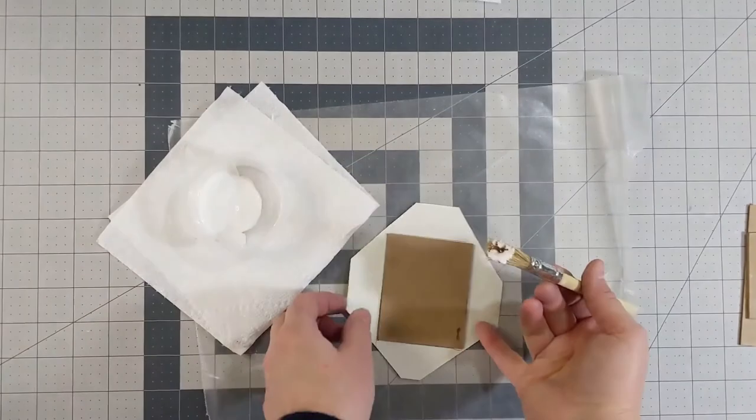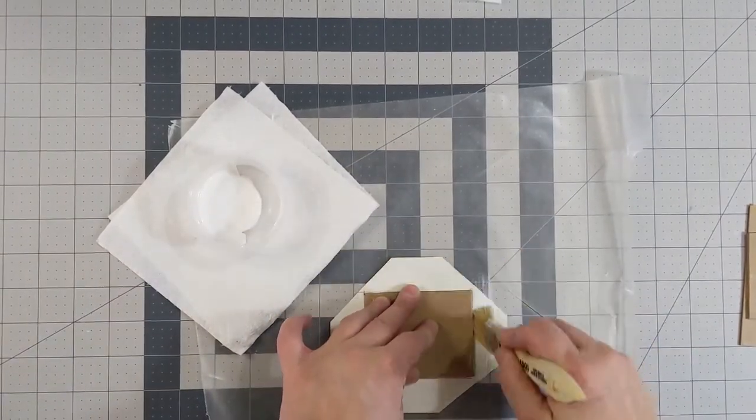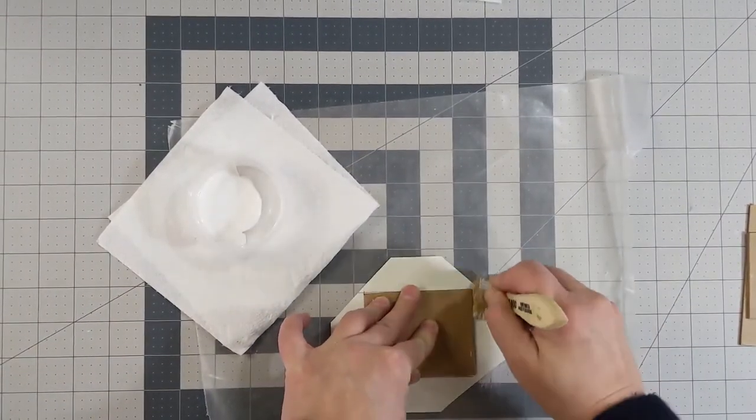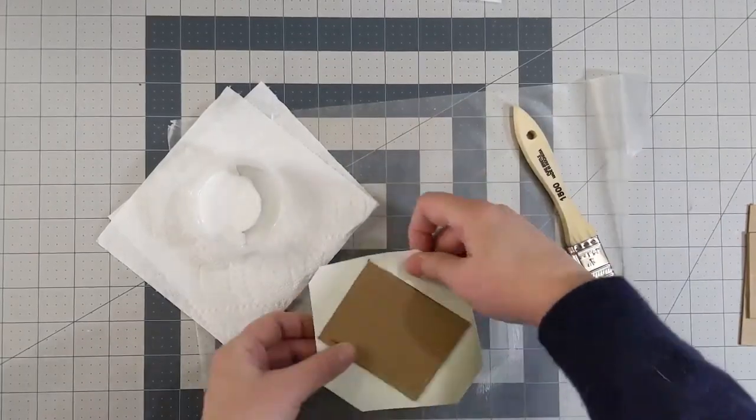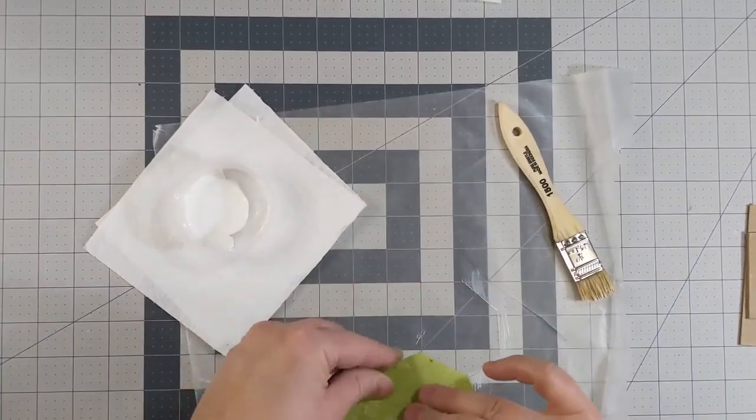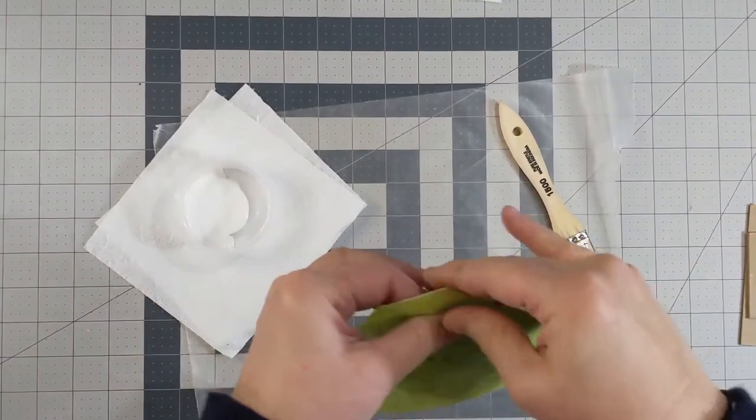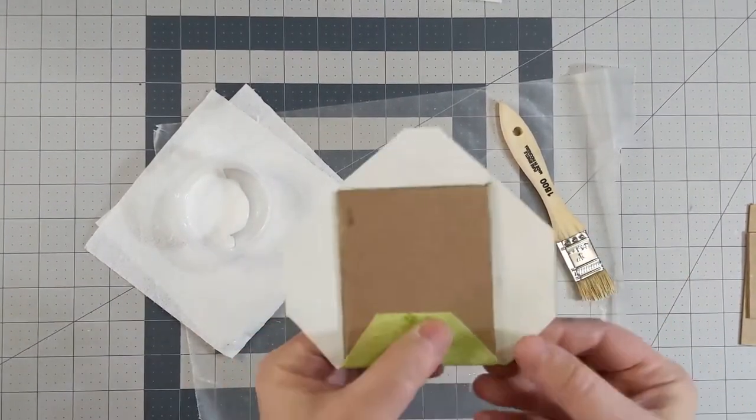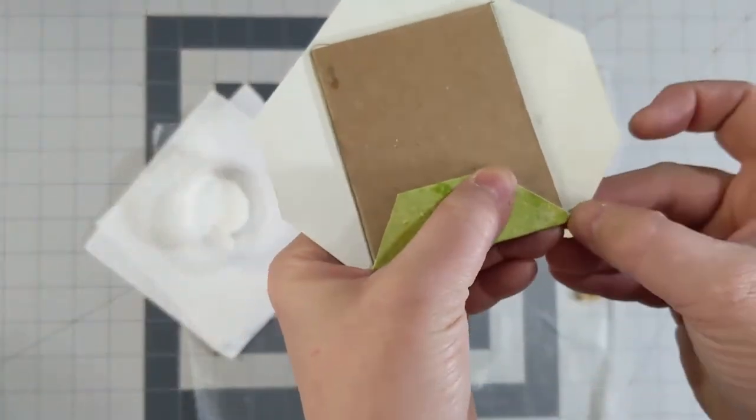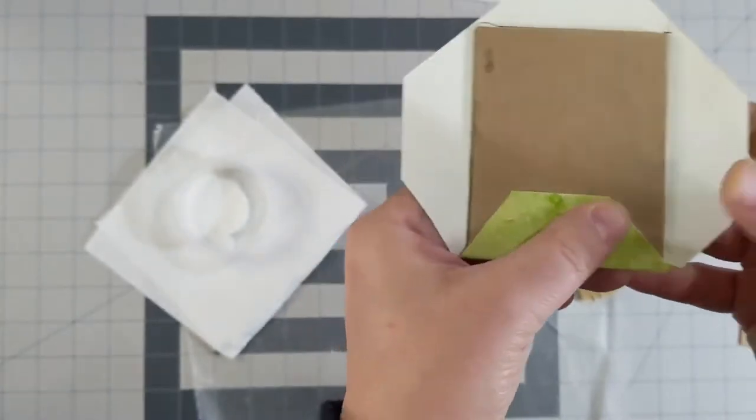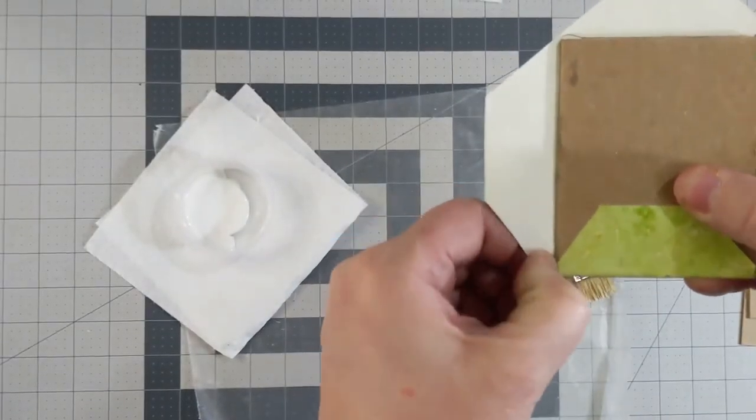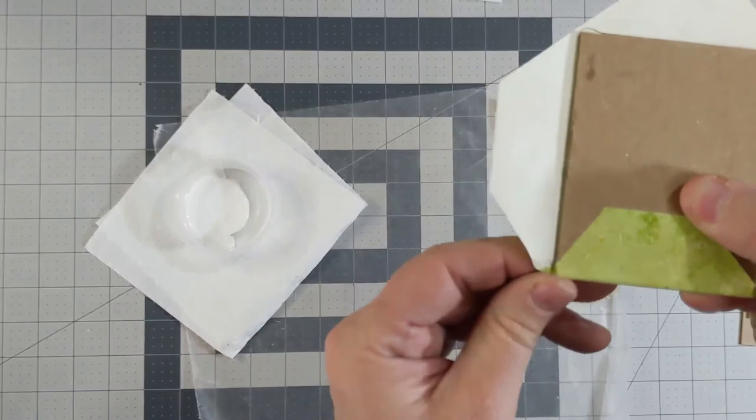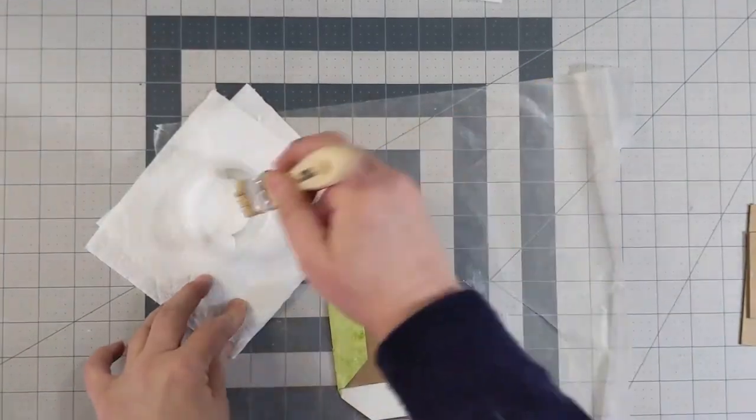Now it's time to glue down the flaps. Start on the short edge. Make sure you get glue along the edge of the board too, and then fold it over. You want to make sure that you've glued that down well. Then you can take your fingers or a bone folder and tuck in those little folds. That makes it nice and neat. You'll need to do that on both sides.